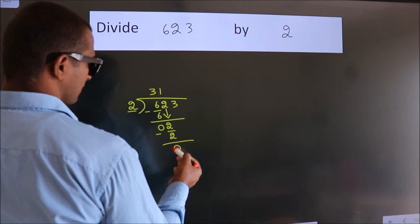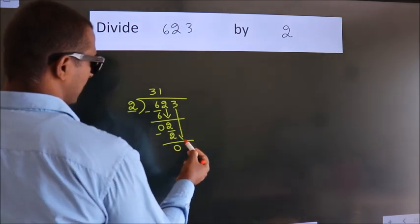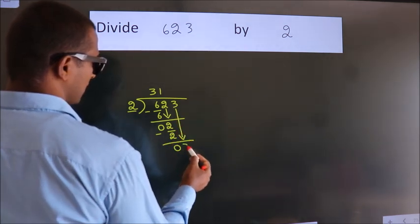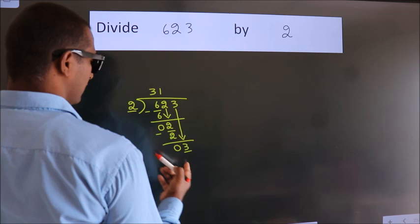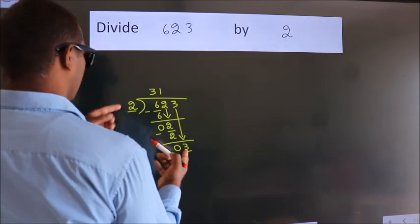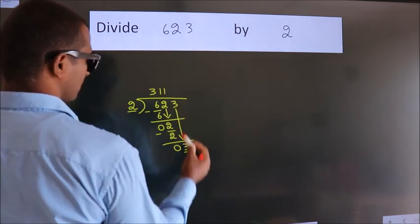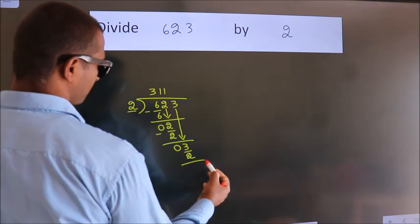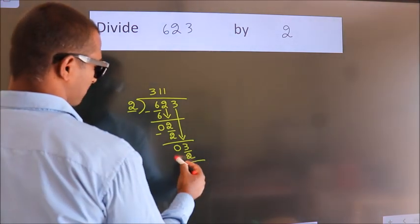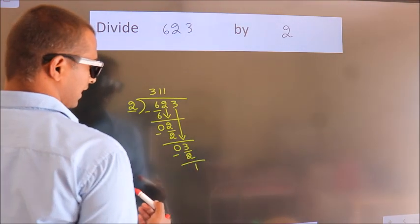After this, bring down the next number, which is 3. We need a number close to 3. In the 2 times table, 2 times 1 is 2. Now we subtract and get 1.